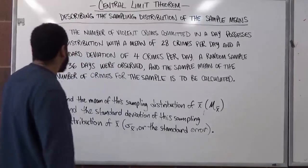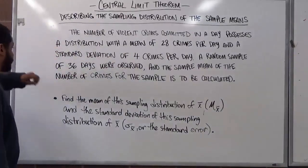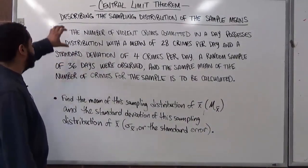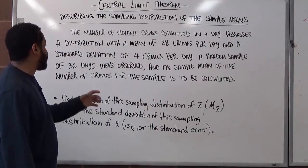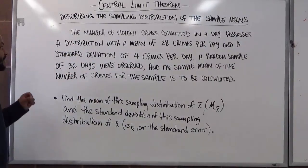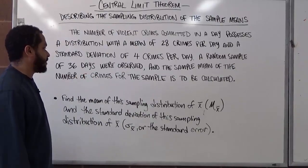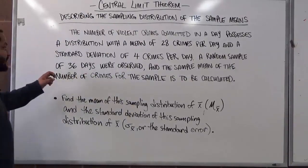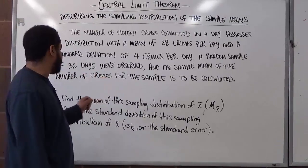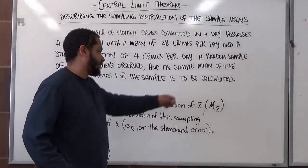So let's begin with this problem so we can see the question and the solution to the problem we have here. The number of violent crimes committed in a day possesses a distribution with a mean of 28 crimes per day and a standard deviation of 4 crimes per day. A random sample of 36 days were observed and the sample mean of the number of crimes for the sample is to be calculated.